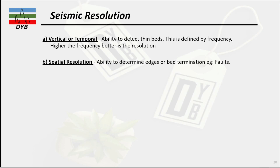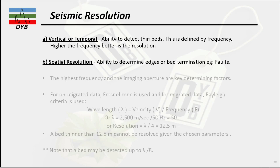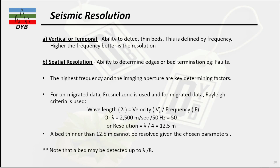These are the two types of resolution in seismic. As mentioned, the higher the frequency, the higher the resolution. The highest frequency and the imaging aperture are the key determination factors for seismic resolution. For unmigrated data, the Fresnel zone is used, and for migrated data the Rayleigh criteria is applied.